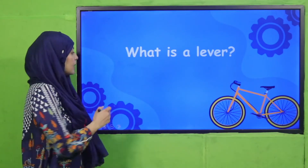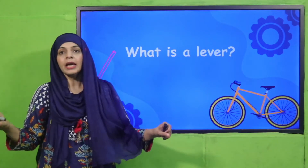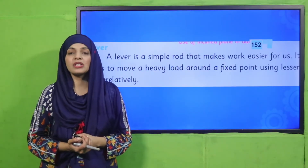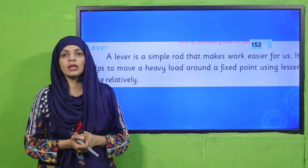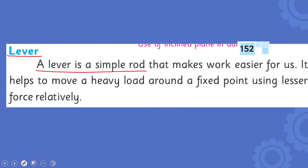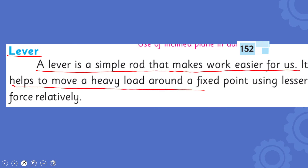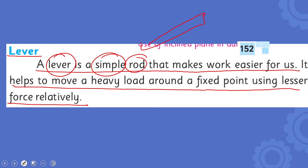What is a lever? A lever is a flat rod that helps us to lift any heavy load. I request you all to please open page number 152 in your GK3 books. Put your fingers where I will read. A lever is a simple rod that makes work easier for us and helps us to move a heavy load around a fixed point using lesser force. When you attach this rod with a weight, the force direction is downward and the weight moves upward and lifts.